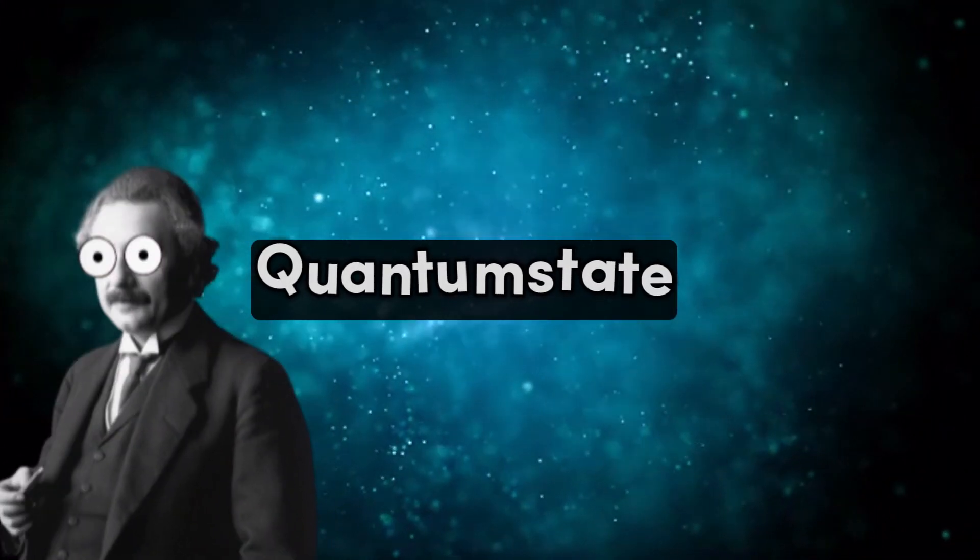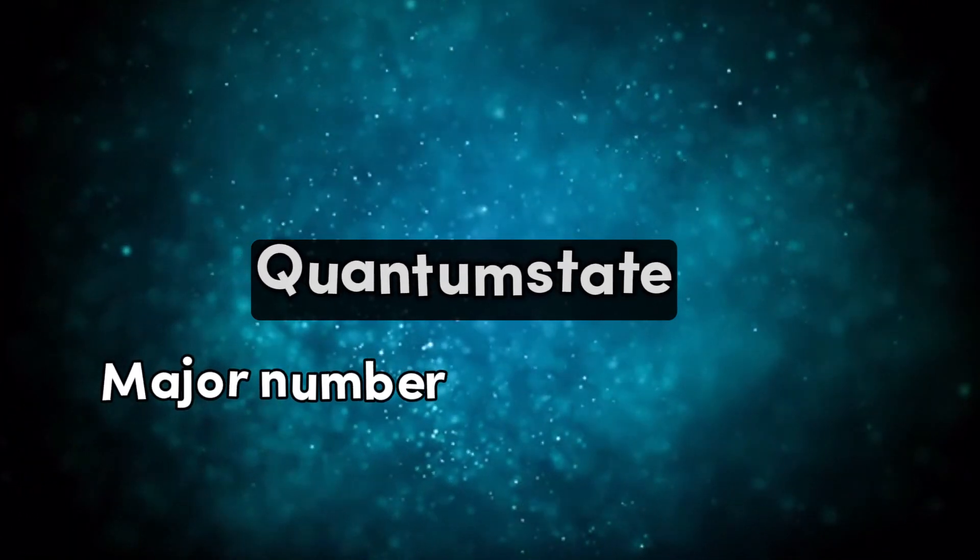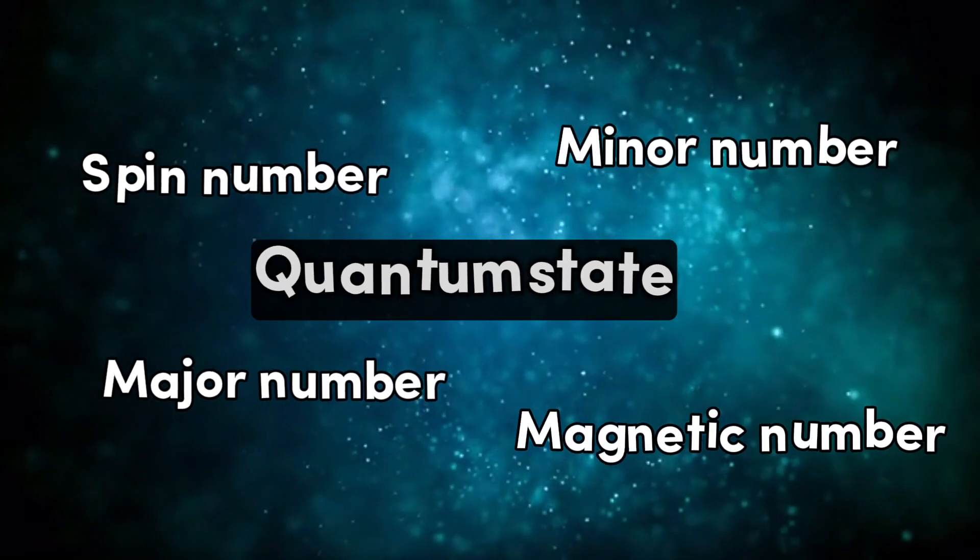But what is a quantum state? A quantum state is defined by a combination of quantum numbers, such as major quantum number, minor quantum number, magnetic quantum number, and spin quantum number.